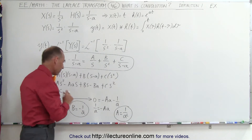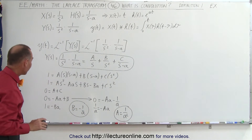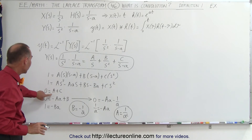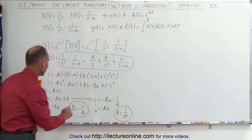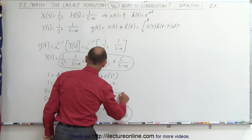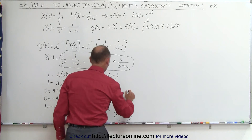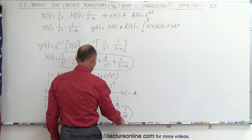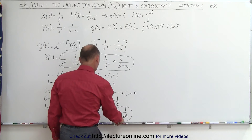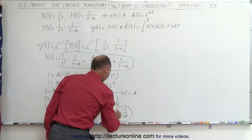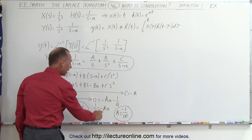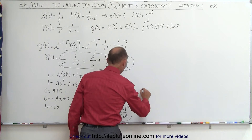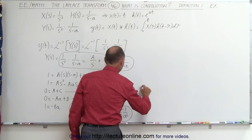Now we have B and A, so all we need to do is find C. Since 0 equals A plus C, we can conclude that C equals minus A. Since A is minus 1/a², C would be equal to plus 1/a².